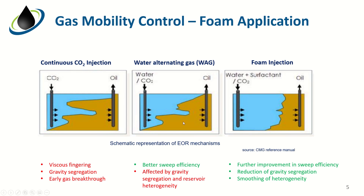Gas mobility control is one of the applications we will be illustrating with this tutorial. Looking at this first diagram, this is an example of CO2 injection. CO2 is very light in density and hence has the ability to move to structural highs of the reservoir, causing phenomena such as viscous fingering and early gas breakthrough. To improve this EOR method, we normally do water alternating gas, which is a simultaneous injection of water and gas. Water alternating gas improves pure CO2 injection — the sweep efficiency has been increased by simultaneously injecting water and gas. However, CO2 still has the ability to go to the structural highs, leaving high zones of oil unswept.